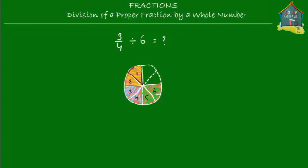Now we have six slices and six friends. We give this small slice to friend one, this one to friend two, this to friend three, this to friend four, this to friend five, and this to friend six. We can still divide three quarters among six friends, but each friend gets a smaller slice. What fraction of the entire pizza is this one small slice equal to?